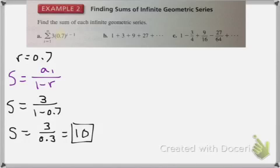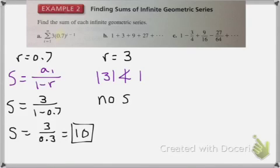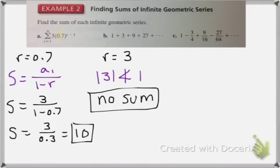Now let's look at b. Here I can see that my r value is 3, because each time I'm multiplying by 3. Well, since the absolute value of 3 is not less than 1, this geometric series has no sum. Easy as that. Our r value didn't work, so we can't do it.